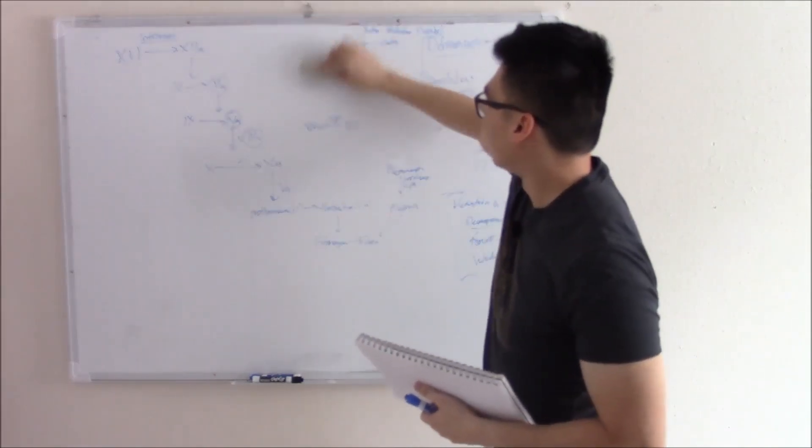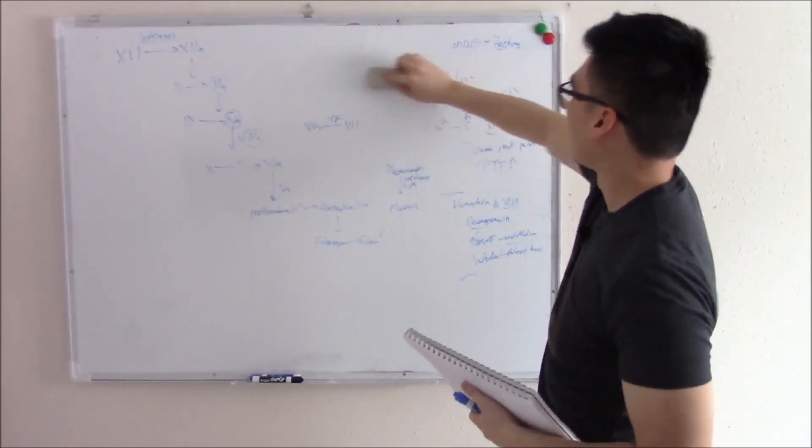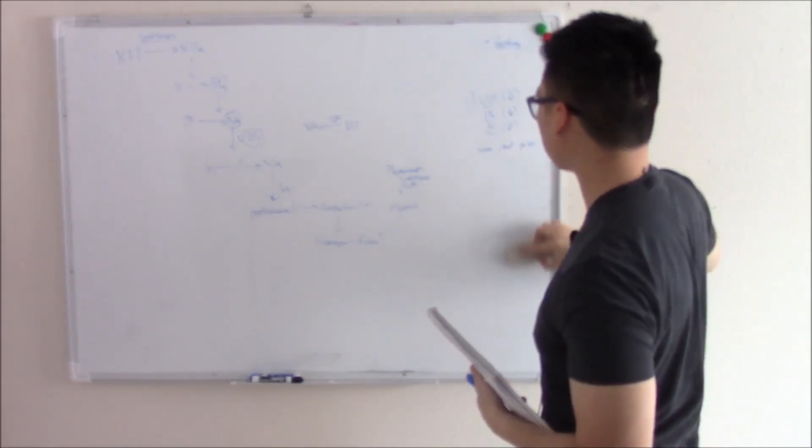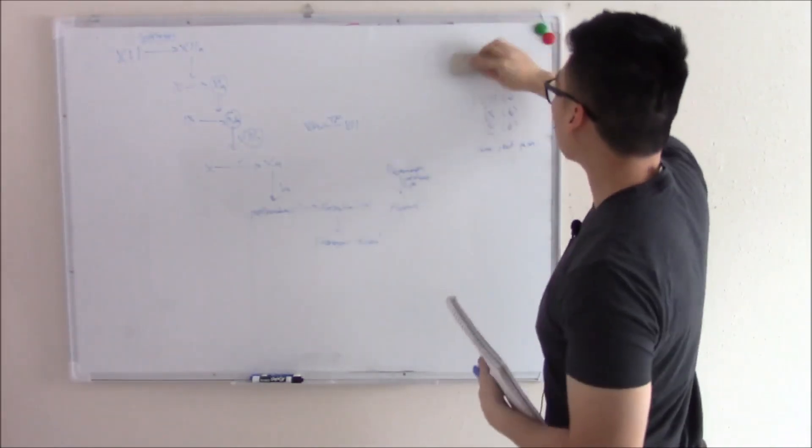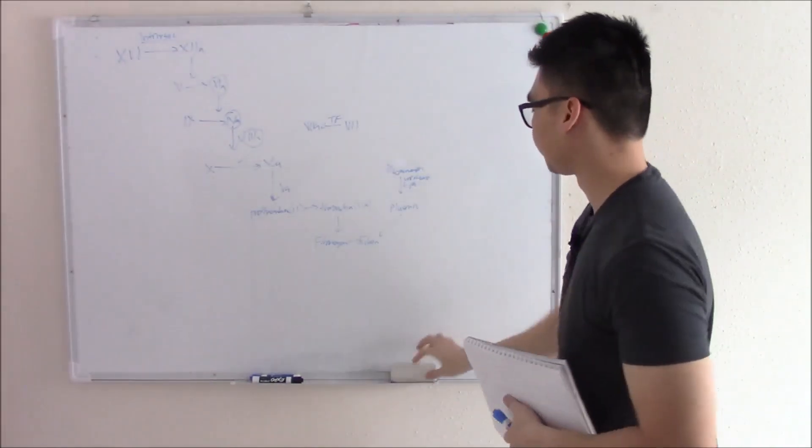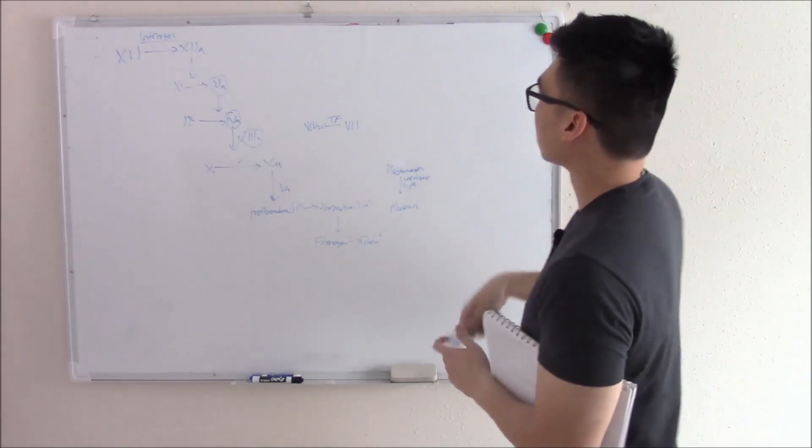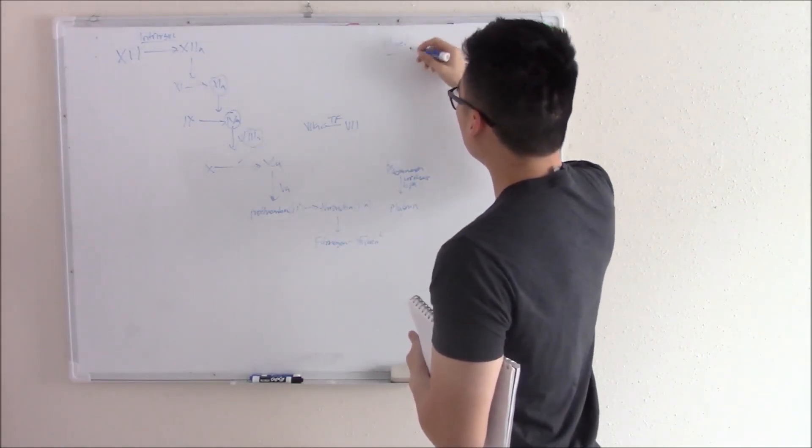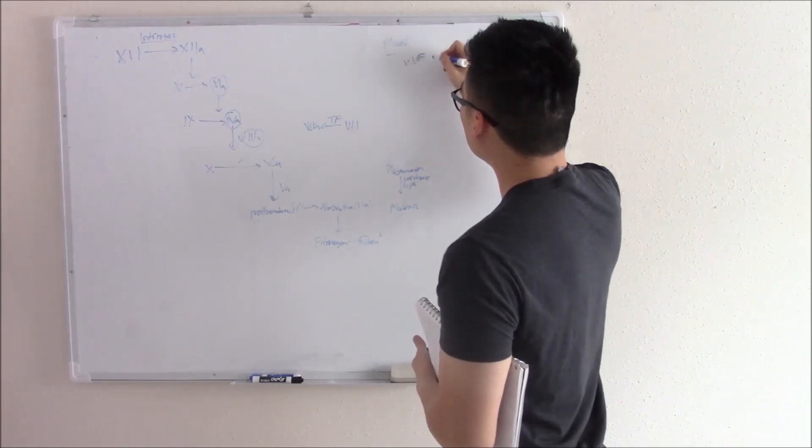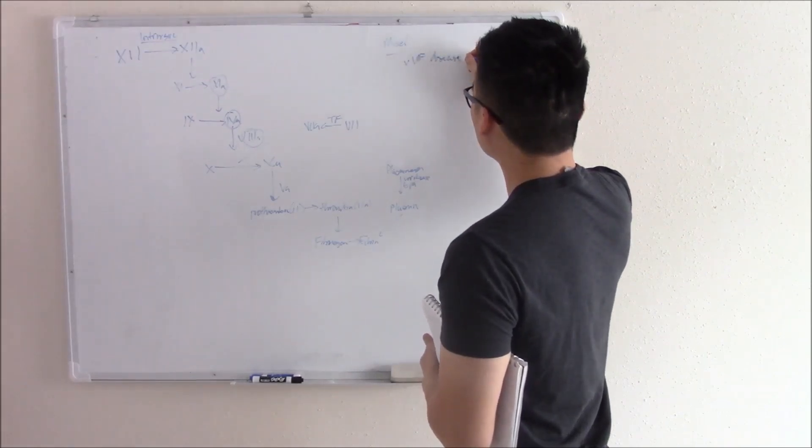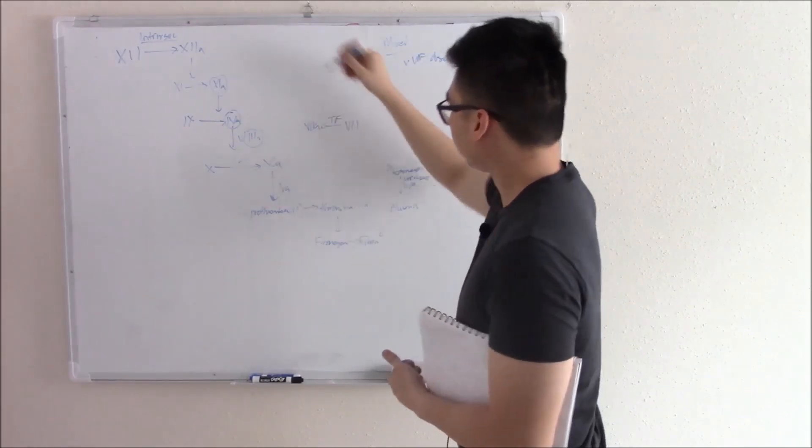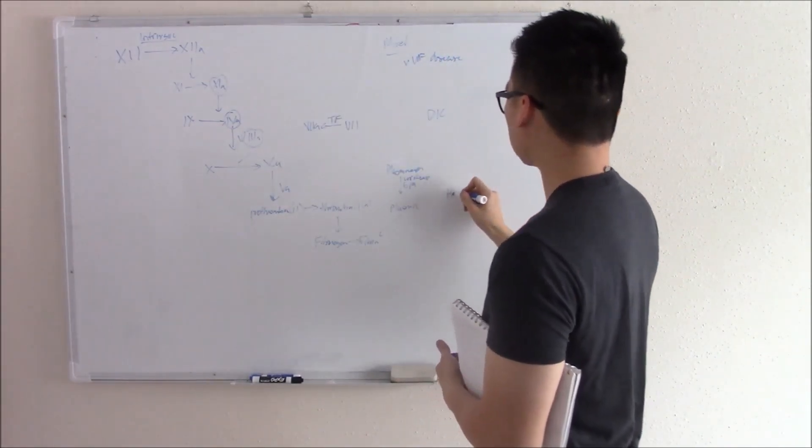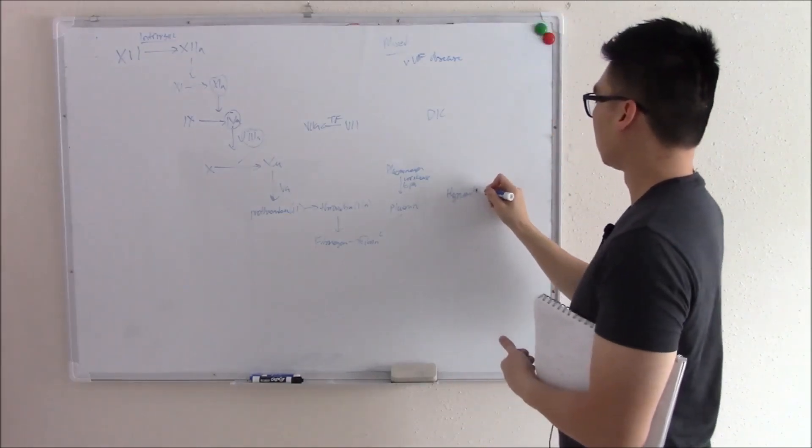Now I want to move on to mixed disorders. This is a deficiency in both platelets, so primary hemostasis, and coagulation factor, secondary hemostasis. Mixed disorders include things like von Willebrand's disease, DIC, and hyperactive plasmin.